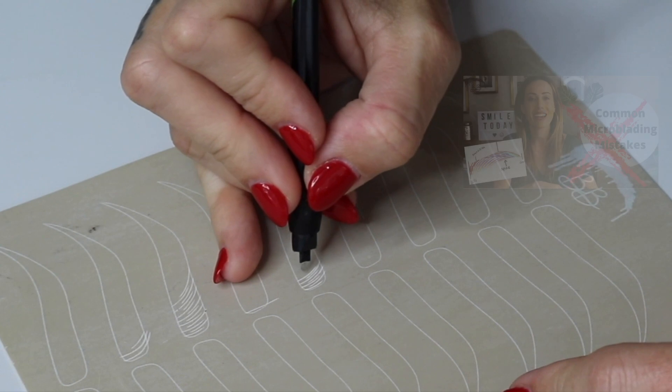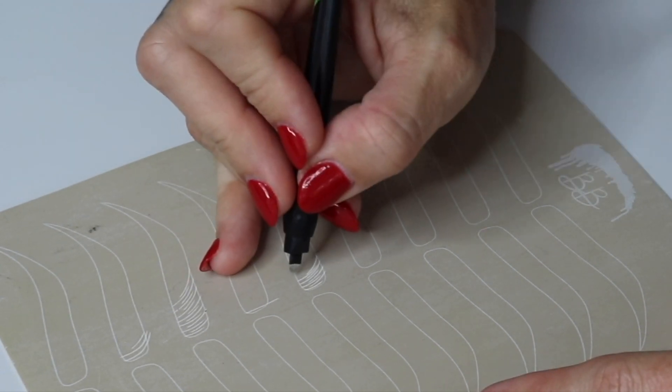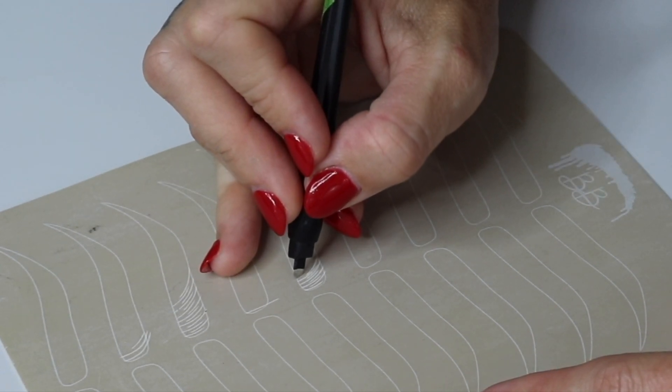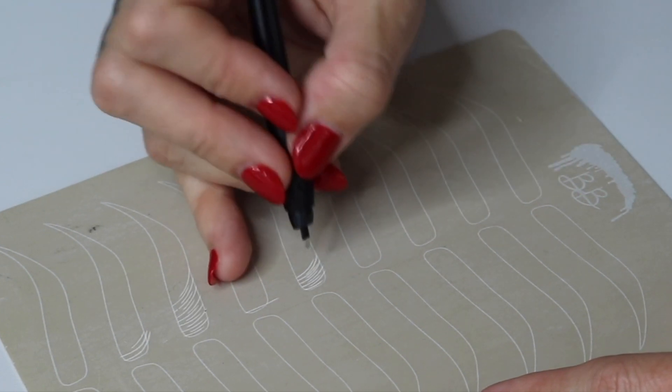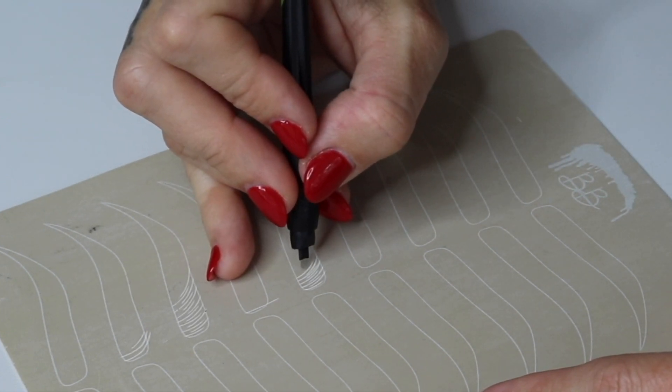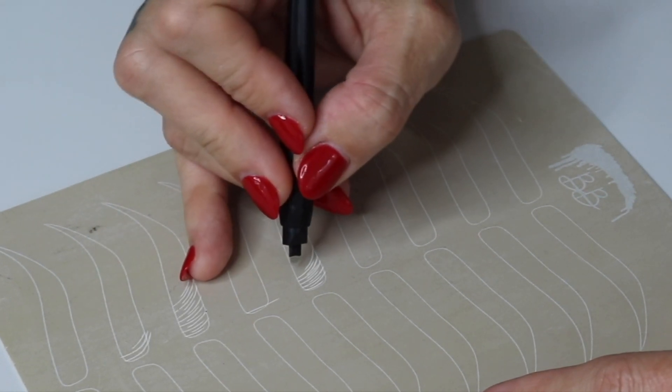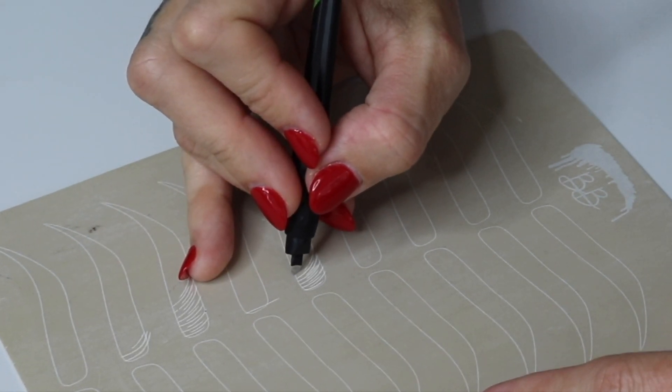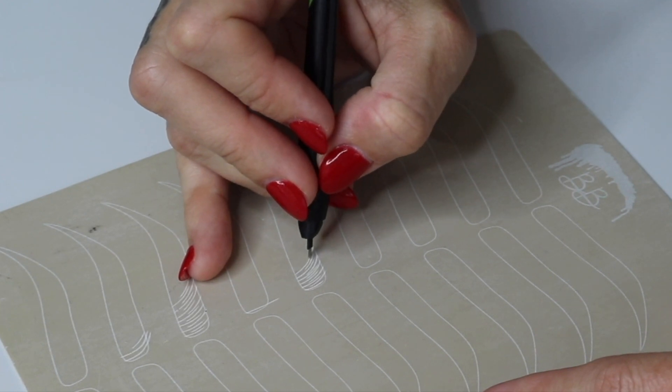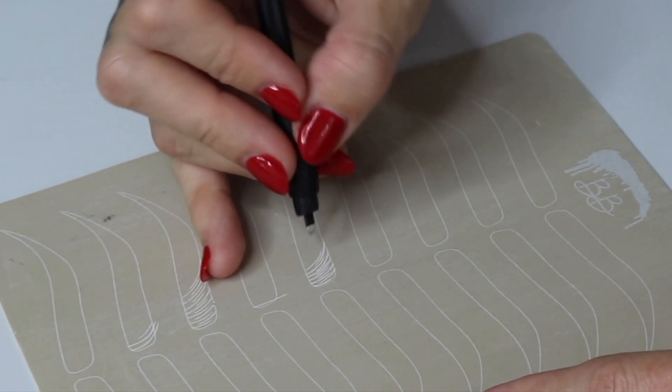What really separates beginners work to advanced micro bladers is the flow of their eyebrow. I like to also say the spine of their eyebrow but that kind of goes hand in hand. If you understand where the spine is that means you understand the flow of your eyebrow or the separation of hair growth.